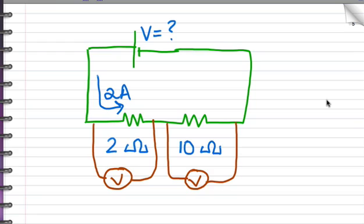Now I want you to try this one. In this case, you already know the current. I want you to find the voltage of the battery and the voltages of the two resistors.